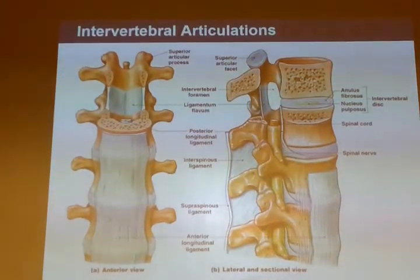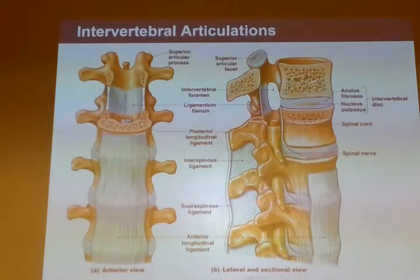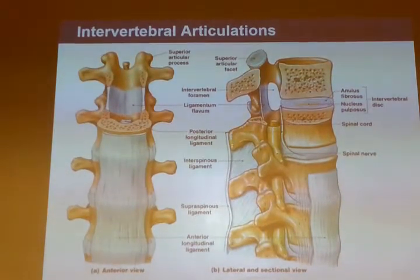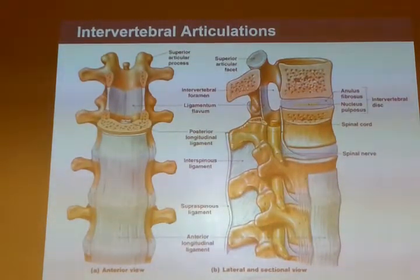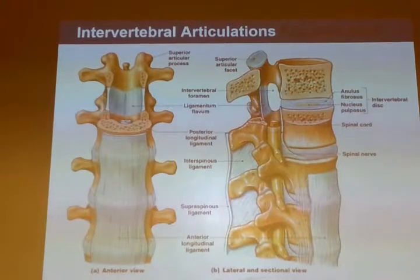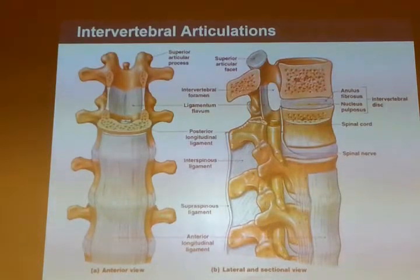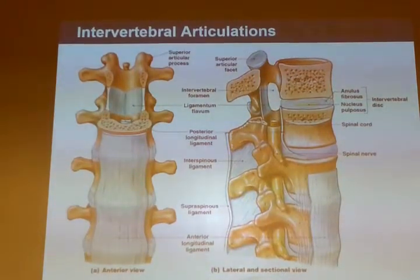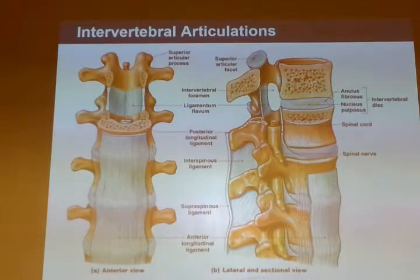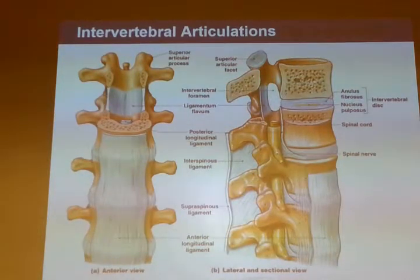The ligamentum nuchae is also there before the spinous processes of the vertebrae are formed. They form around that ligament and then get a bifid structure, a fork structure.